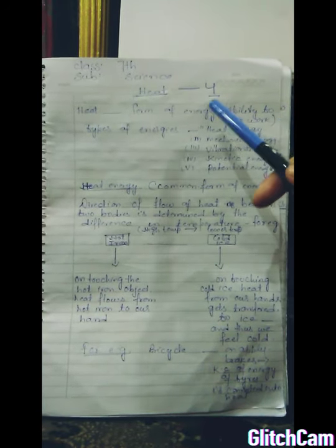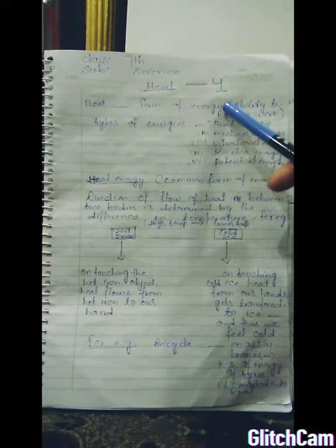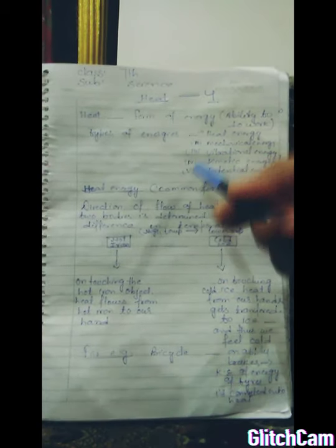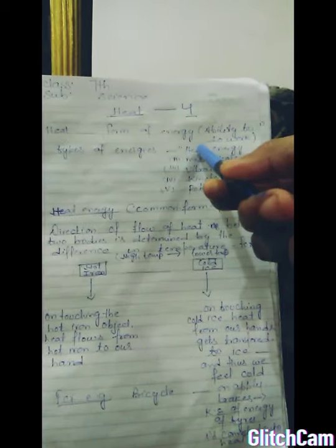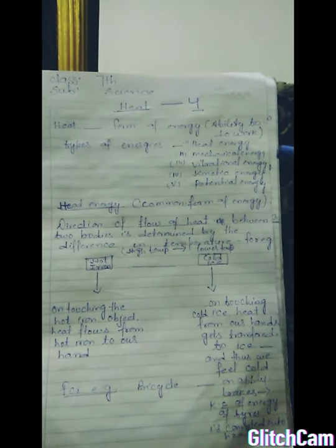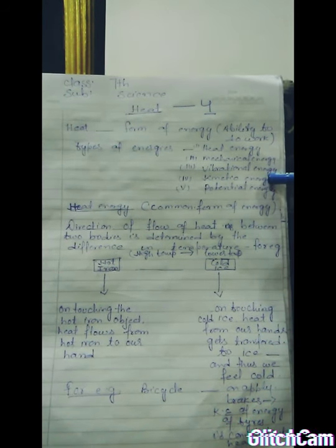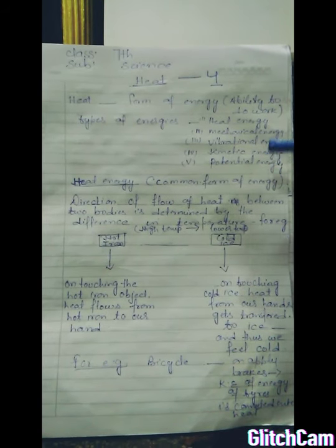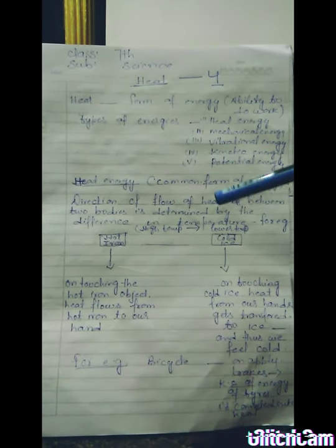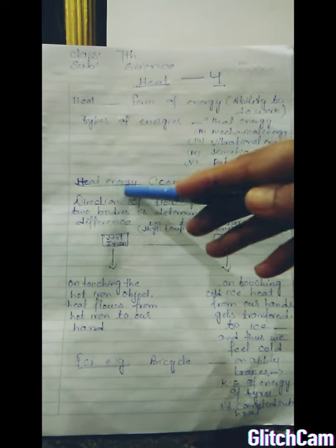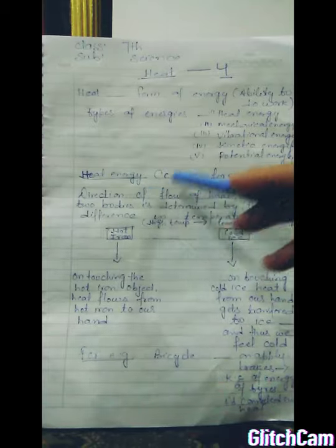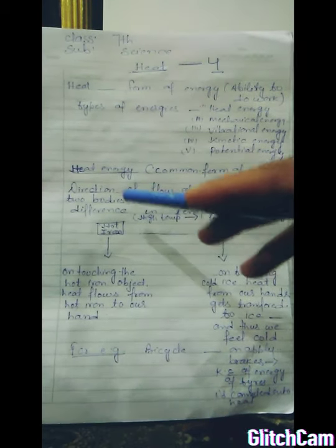Energy is the ability to do work. There are many types of energies: heat energy, mechanical energy, vibrational energy, kinetic energy, and potential energy. These are all examples of types of energies. Heat energy is a common form of energy which we use in day-to-day life.